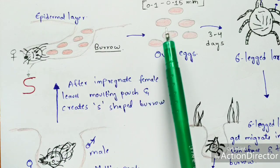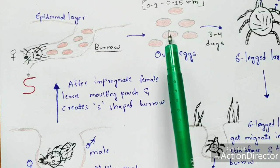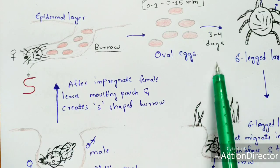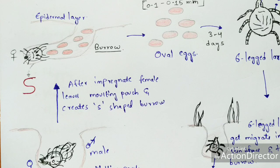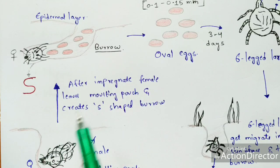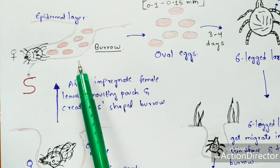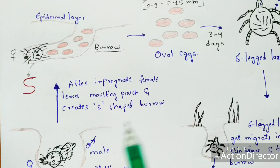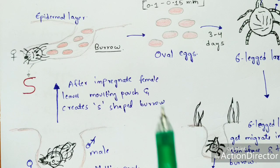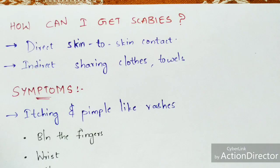After the eggs are laid in the S-shaped burrow, within three to four days the eggs rupture again and the six-legged larva develops. Again the six-legged larva forms a molting pouch, settles within it, and undergoes the molting process, forming eight-legged nymphs, which then undergo final molting to form the adult mite. The adult mite again undergoes copulation, leading to formation of eggs and continuation of the life cycle.